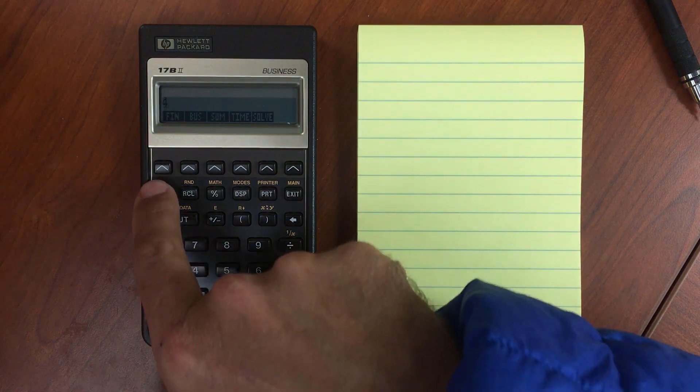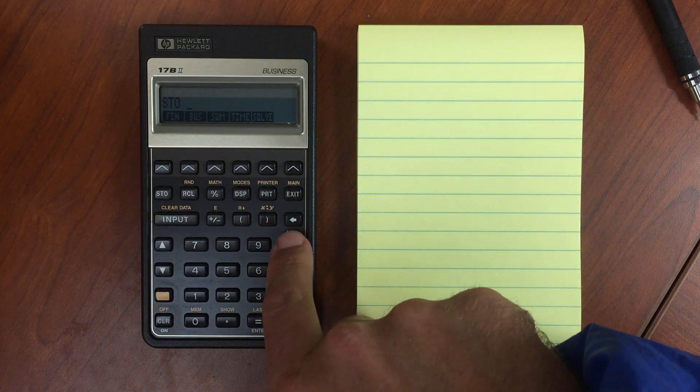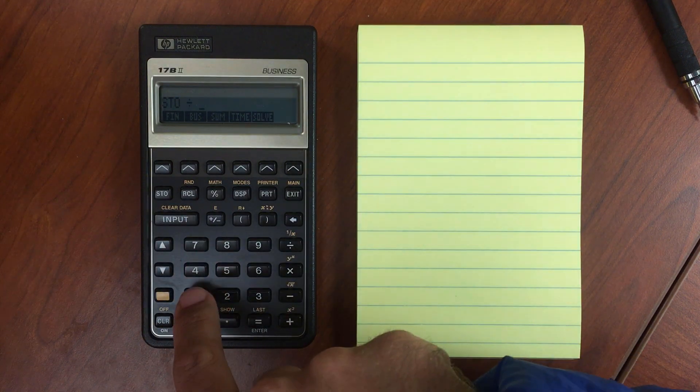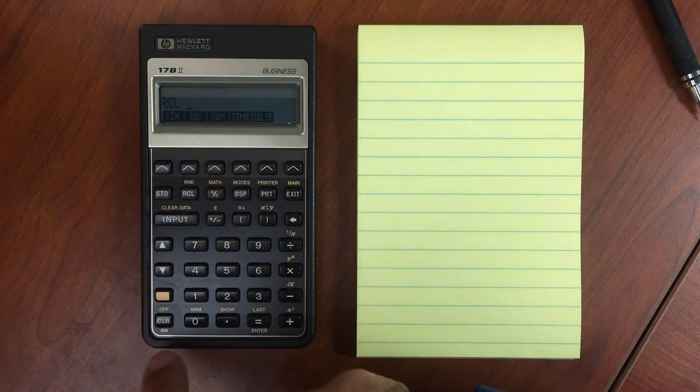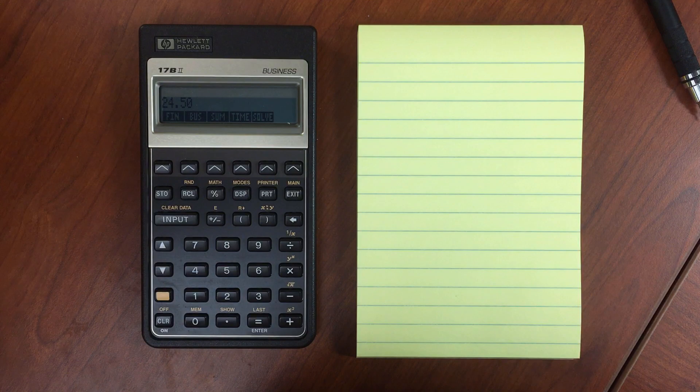And then I can take 4, and let's store, and let's divide register 1 by that. So we just divided register 1 by 4. If I look in register 1 again, I've got 24.5.